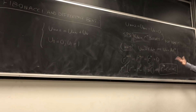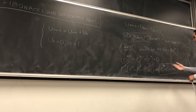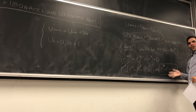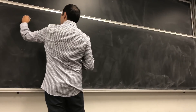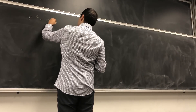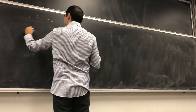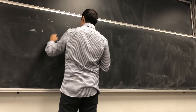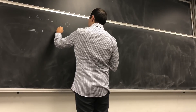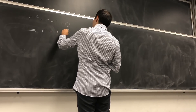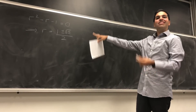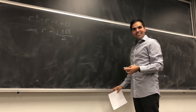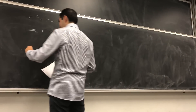This is much easier to solve — we can just use the quadratic formula. From r squared minus r minus 1 equals 0, we get r equals (1 plus or minus square root of 5) over 2. Lo and behold, the golden ratio appears here again, just as expected.